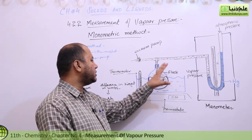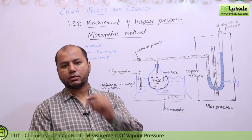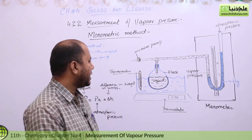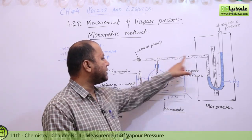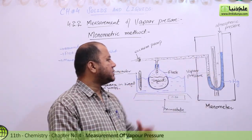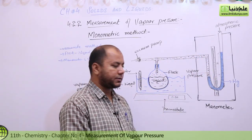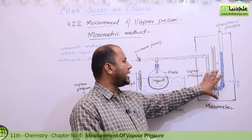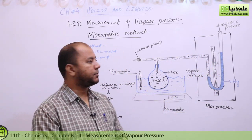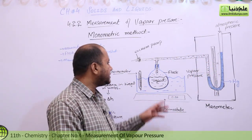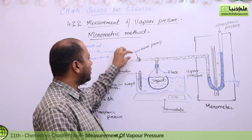Students, in the flask you take the liquid whose vapor pressure you want to measure. Along with this, we have a delivery tube which is attached to the manometer. The manometer is the device through which we will measure the pressure.